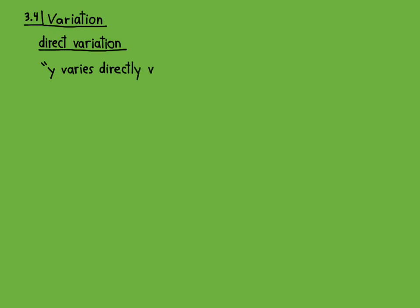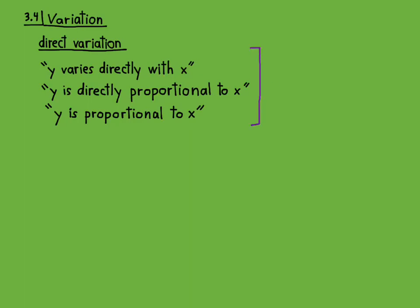And this would be written this way. Y varies directly with X, or Y is directly proportional to X means the same thing, or Y is proportional to X means the same thing. That's three different ways of saying the same thing.